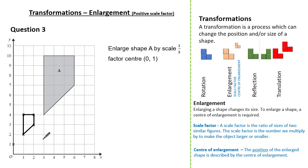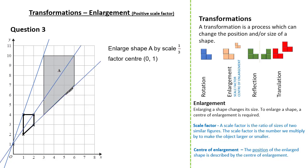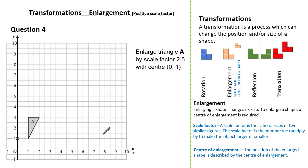Now I'm going to check with ray lines. Just like before, connecting corresponding vertices shows they always meet at the center of enlargement. You can see they all confirm the center of enlargement is at (0, 1).